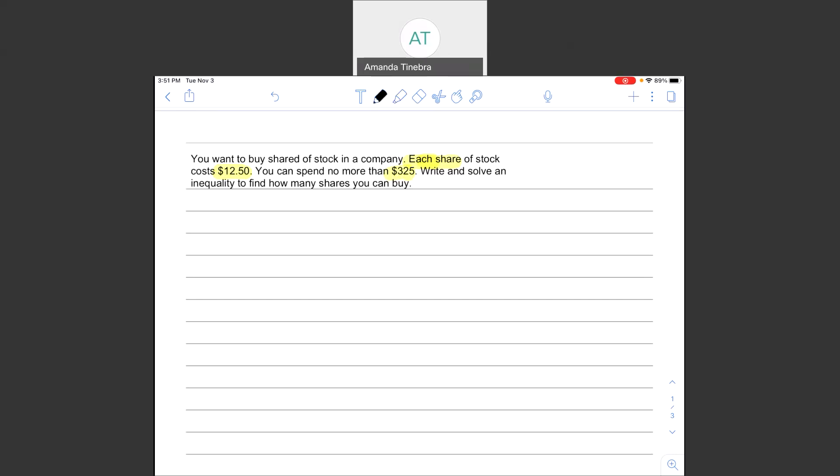Write and solve an inequality to find how many shares you can buy. Okay. Well, so I have each share costs $12.50. So I know it's going to be $12.50 times each share, which I'll just represent with an s.